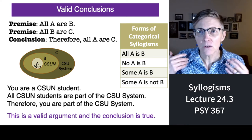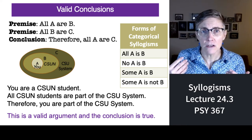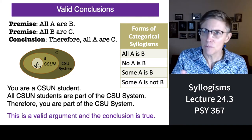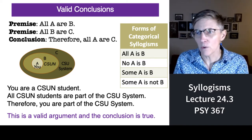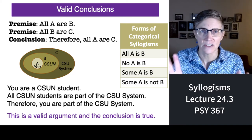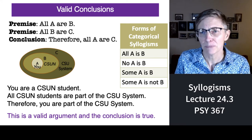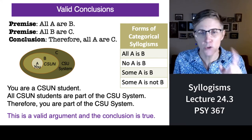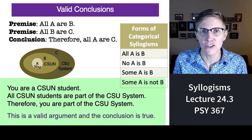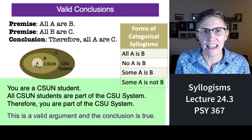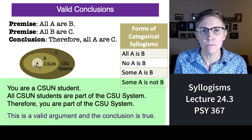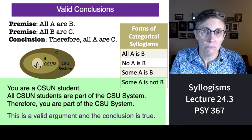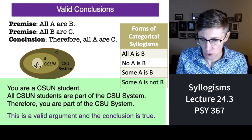There are a lot of different forms of syllogisms — all A is B, no A is B, et cetera. You can take a logic course to learn all about that. But let me just give you an example of a valid argument: you are a CSUN student, CSUN is a part of the Cal State system, so you are a student in the Cal State system. Reasonable, valid argument. No problem.